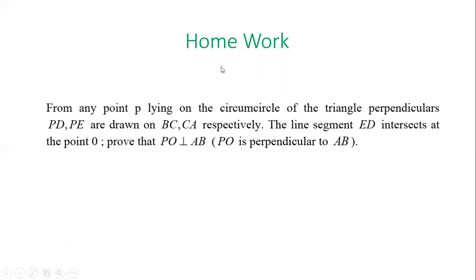Homework: From any point P lying on the circumcircle of triangle ABC, perpendiculars PD and PE are drawn on BC and CA respectively. The line segment ED intersects at point O. Prove that PO is perpendicular on AB.